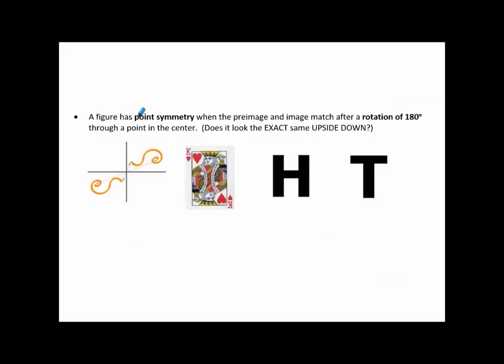A figure has point symmetry when the pre-image and image match after a rotation of 180 degrees through a point in the center. Another way to think about it, does it look the exact same upside down? Remember that that's what a rotation of 180 degrees is, turning it completely upside down. Well, let's take a look.